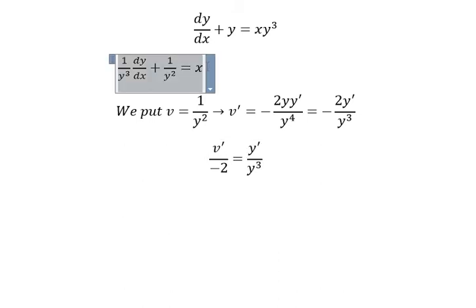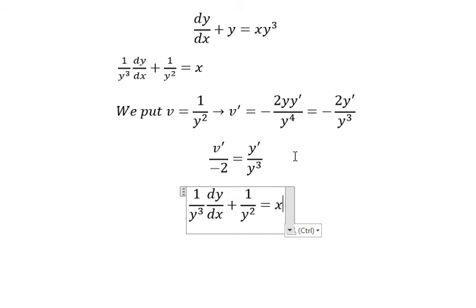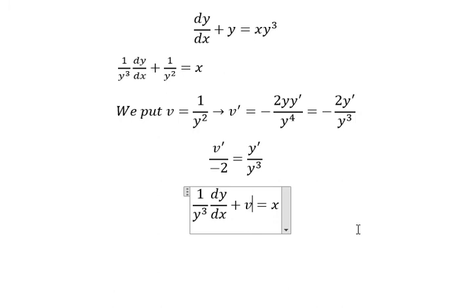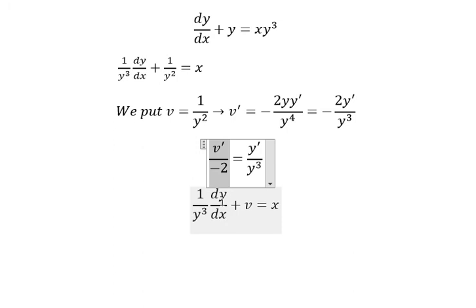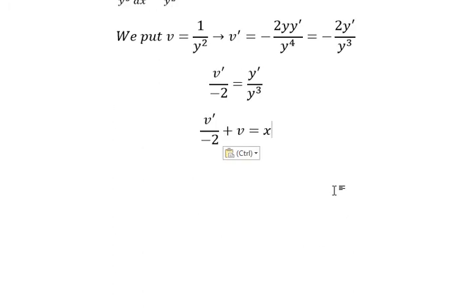Now we need to change 1 over y squared — you get v — and dy over dx, just like the first derivative of y, with y to the power of 3. So we substitute for this one. Later, we multiply both sides by negative 2.